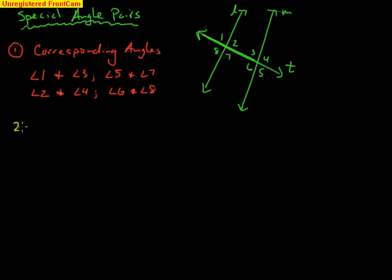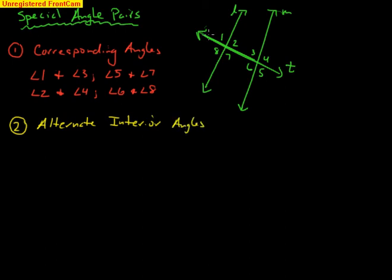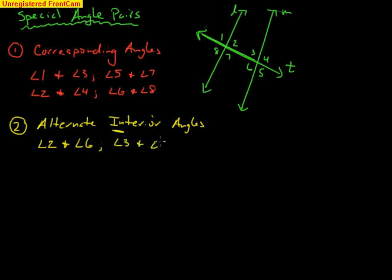Second, we talk about alternate interior angles. The word 'interior' means in between lines L and M, and 'alternate' means on opposite sides of the transversal. We throw out angles one, four, five, and eight because they're outside those lines. Angle two and angle six are alternate interior angles. Angle three and angle seven are alternate interior angles — inside the lines, on opposite sides of the transversal.